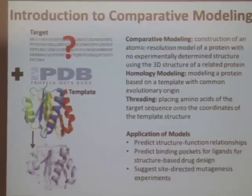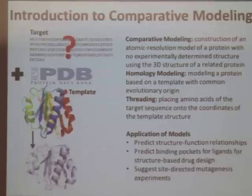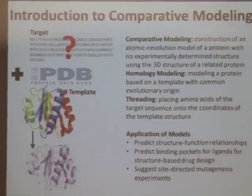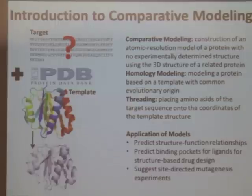There are many applications to these models. You can use them to predict structure-function relationships and predict binding pockets for ligands. They're really powerful in suggesting site-directed mutagenesis experiments for experimentalists. If you can create a model of your protein, it gives you a visual aid to go in and say, I want to try making mutants in this area of the protein because that's where I think the binding site is.